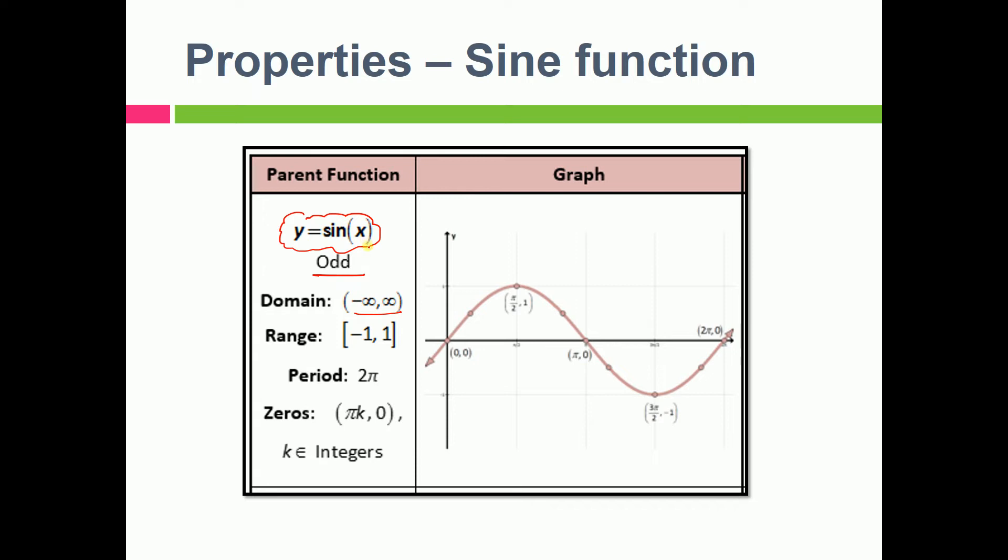So domain actually means the values of this x that it could take. The values of x it could take, the x value could be either tending to minus infinity or it could go to plus infinity. Any value it can take, x can take any value between minus infinity to infinity. And the value of y that you will get will always be between minus one and one. So let's say this is minus one and this is one, so the value of this sine x will always lie within this vertical height.